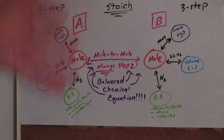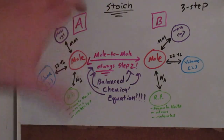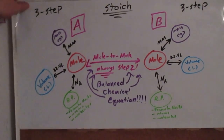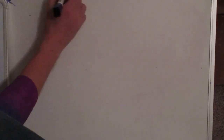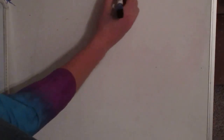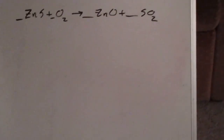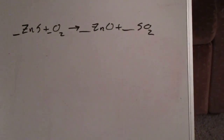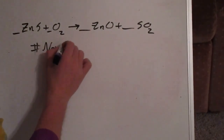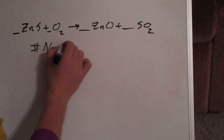You might want to pause the video and take out your flowchart. I'm going to be taking this away and assuming you have it. Here's a blank space to work with. First, you need a balanced chemical equation. Let's do: zinc sulfide reacts with oxygen to produce zinc oxide and sulfur dioxide.